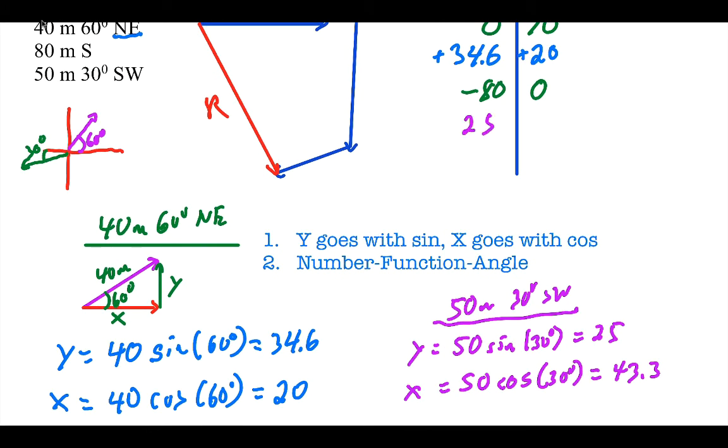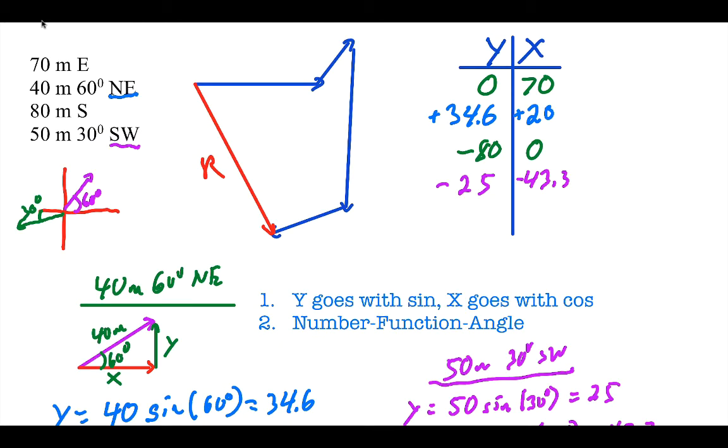I come up here, 25 here, 43.3 here. I check my signs. South is negative and so is west, so I need to make sure those are negative. Don't forget to check that. That's one of the biggest mistakes that's made here. If you look, I have all my components. Now I just need to do the steps I've been doing before.